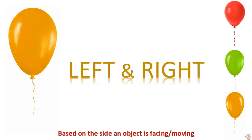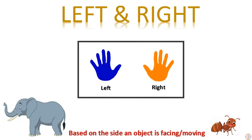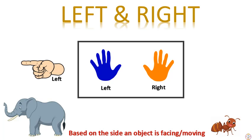Our next concept is left and right, and here it is based on the side an object is facing or moving. Now let's learn about the concept of left and right based on the side an object is facing or moving. Here you can see an elephant and an ant. The elephant is facing towards the left and the ant is facing towards the right.